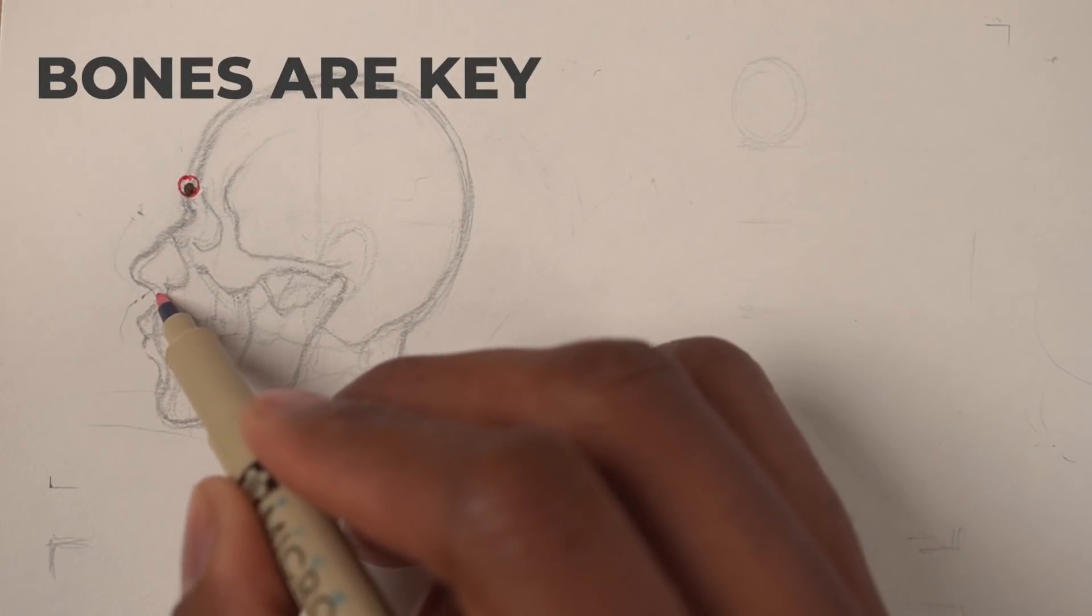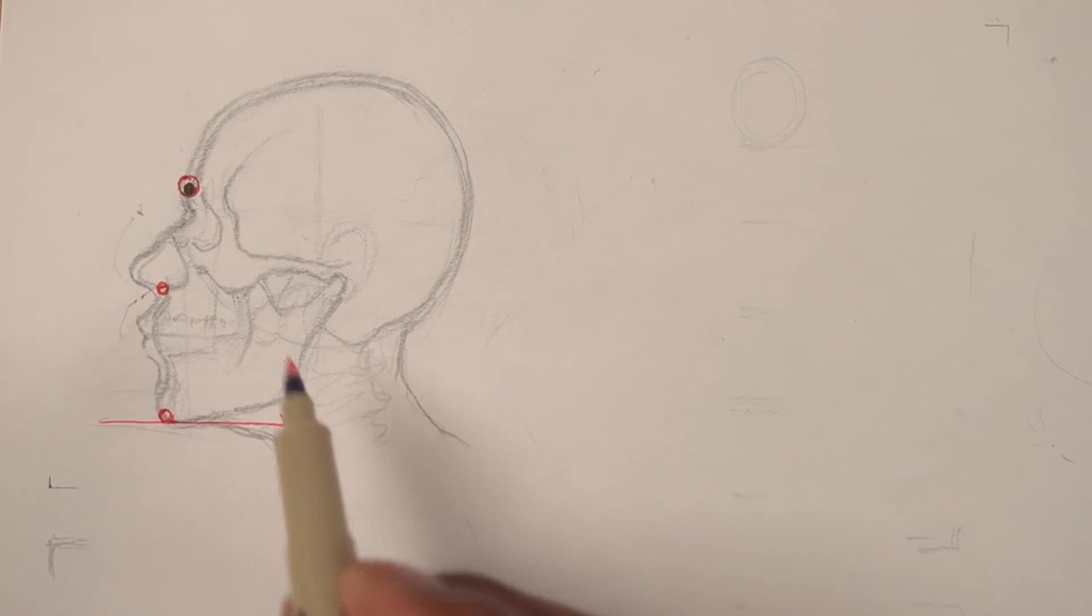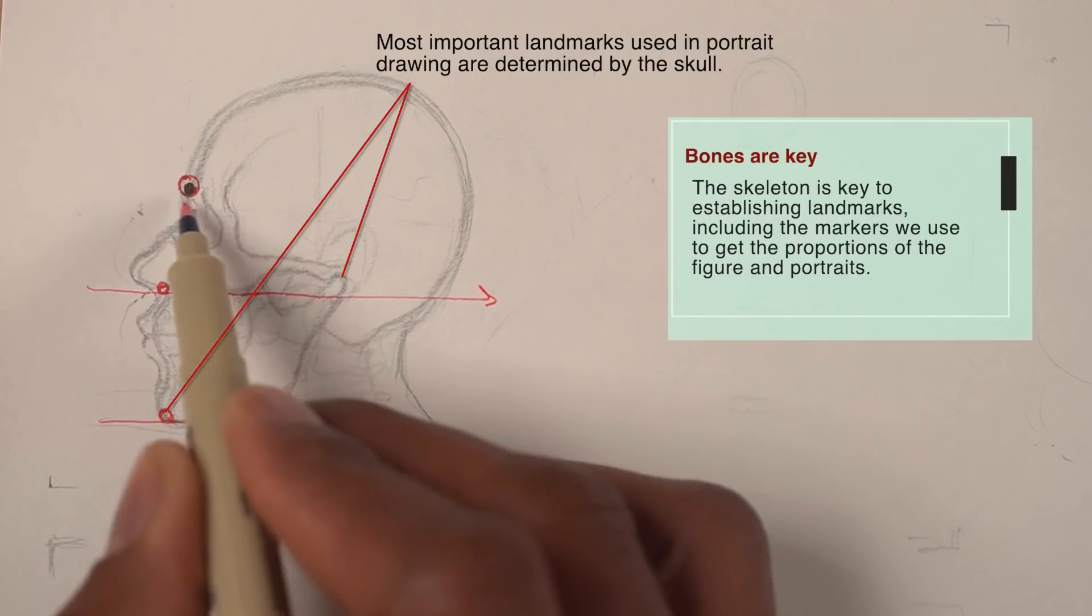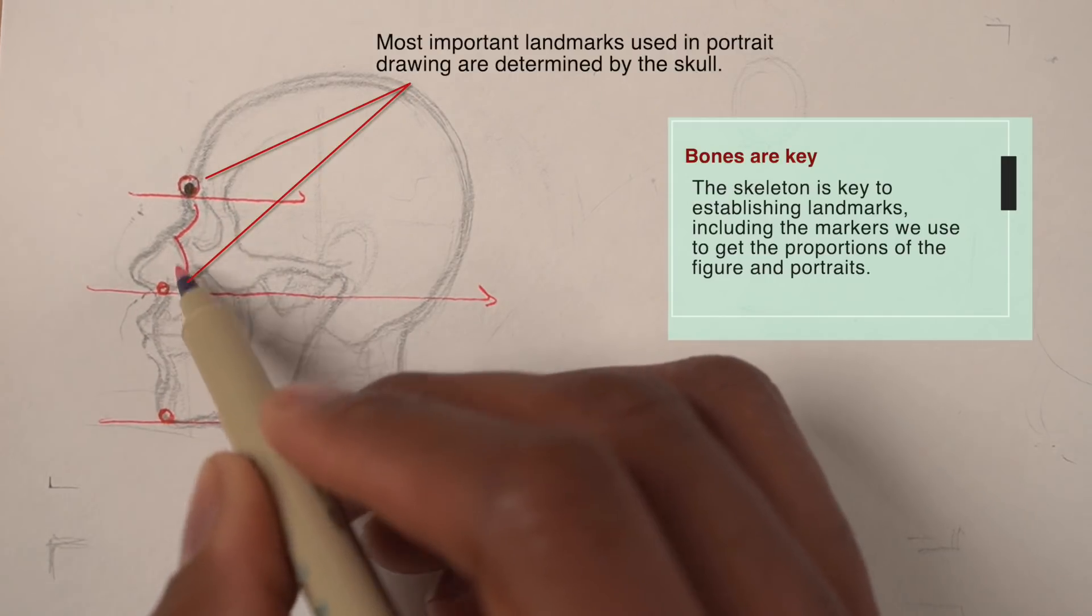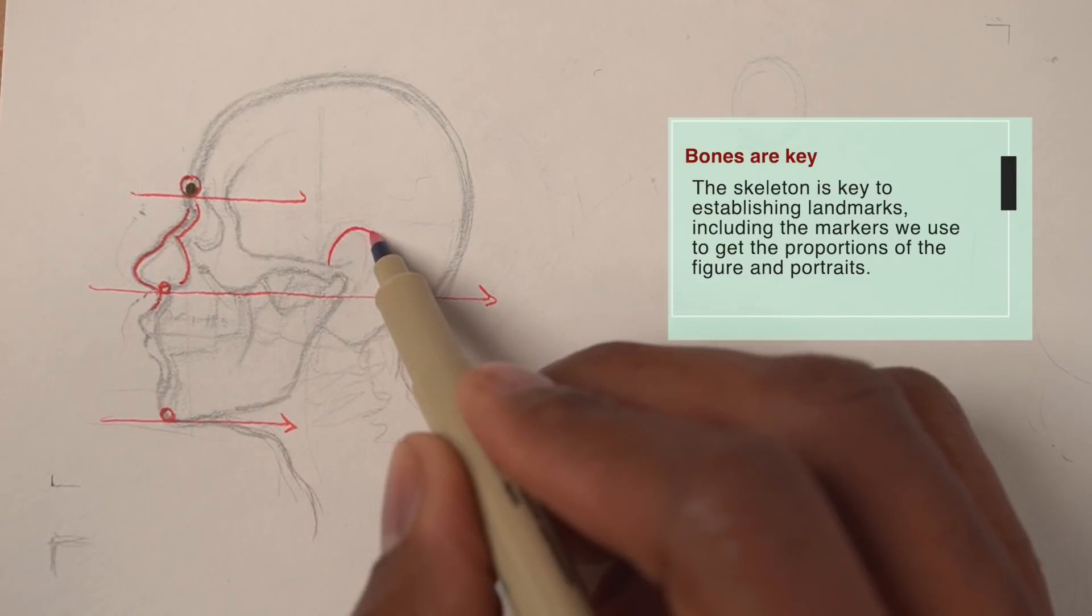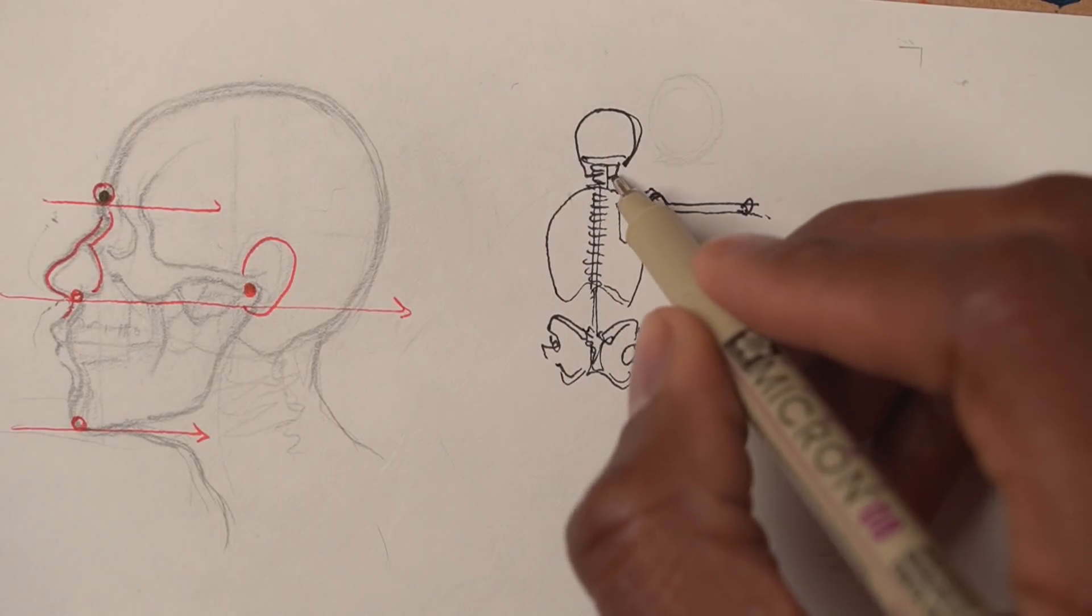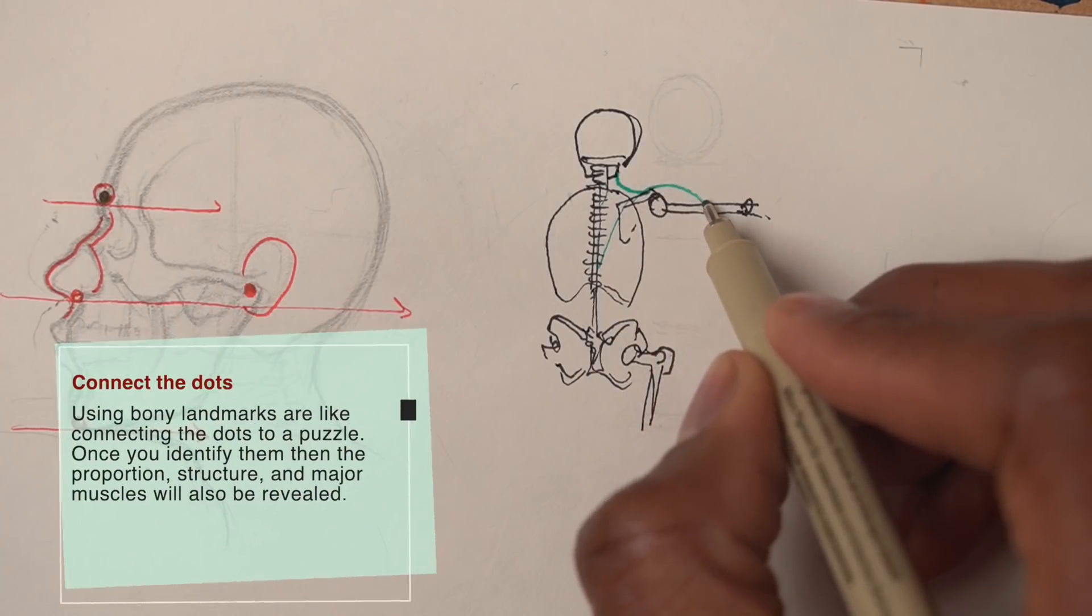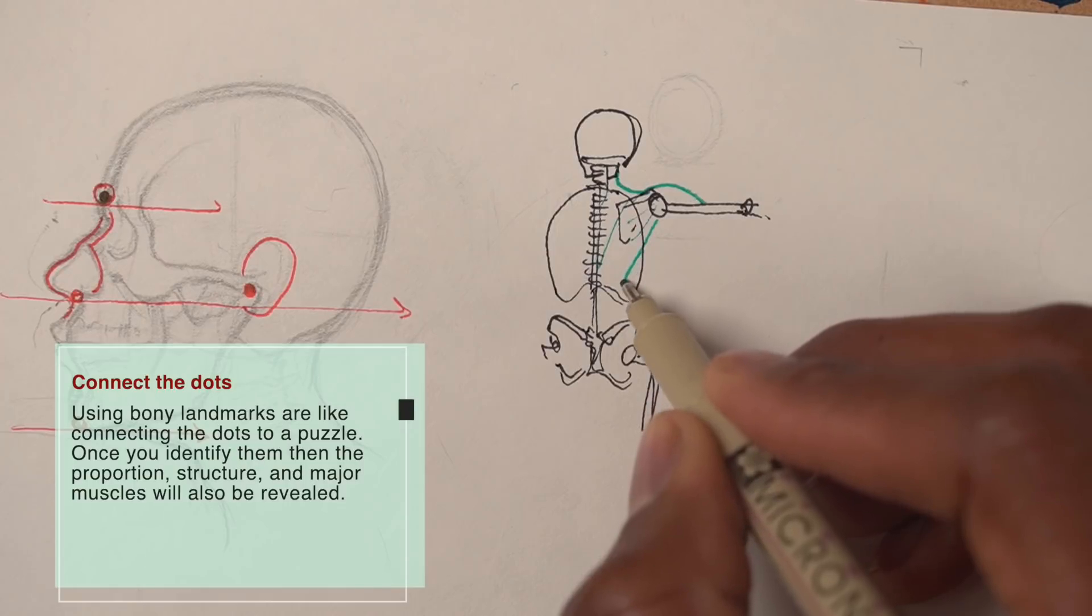The first thing I always advise is to learn bones first. Bones are very important for learning the body's proportion, structure, and also for understanding the attachment point of muscles. Of course, as I said before, you don't need to learn all the bones. For example, you don't need to know every single bone that makes up the skull. Start with learning the basic framework and how the parts relate to each other in terms of proportion, volume, structure, and so on.